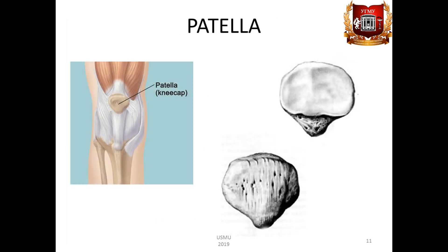The patella is a large sesamoid bone that is enclosed in the tendon of the quadriceps of the femur. We can see the base of the patella upward, and the apex of the patella, apex patellae, downward. This bone has a front surface, facies anterior, and an internal articular surface, facies articularis.